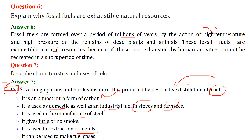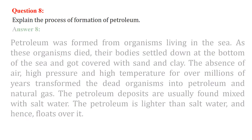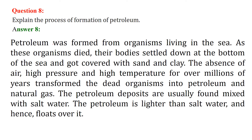Coke can also be used to make fuel gases. Explain the process of formation of petroleum. Petroleum was formed from organisms living in the sea. As these organisms died, their bodies settled at the bottom of the sea, covered with sand and clay. In the absence of air, with high pressure and high temperature over millions of years, the dead organisms transformed into petroleum and natural gas. These petroleum deposits are usually found mixed with salt water; since petroleum is lighter than salt water, it flows over it.